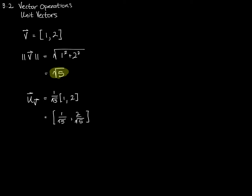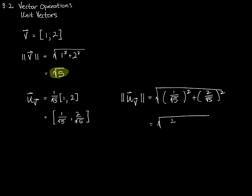If I want to verify that the length of this new unit vector is in fact 1, I take the components and use them in the magnitude formula. The magnitude is the square root of (1/√5)² plus (2/√5)², which gives the square root of 1/5 plus 4/5, which is the square root of 5/5, which is the square root of 1, which is 1. So this is a unit vector.